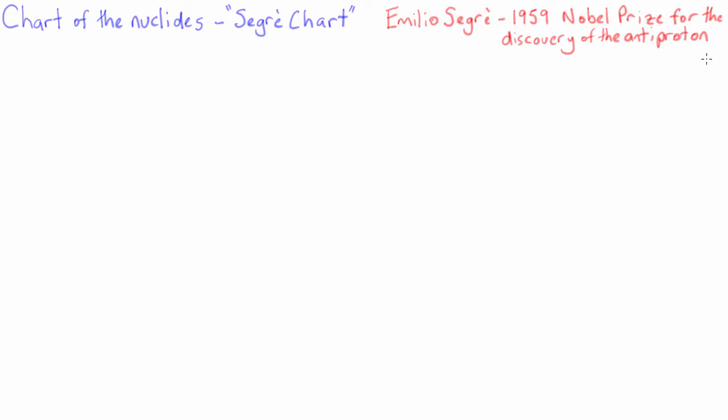The Segre chart is a way to depict all nuclei by plotting them as a function of their number of protons, Z, and their number of neutrons, N.